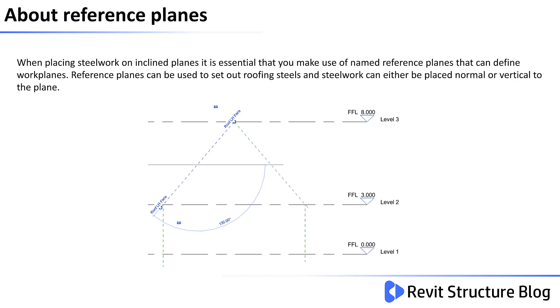When placing steelwork on inclined planes it's essential that you make use of named reference planes that can define work planes. Reference planes can be used to set out roofing sills, and steelwork can either be placed normal or vertical to that plane.